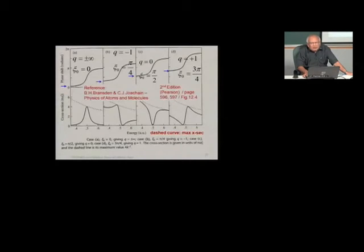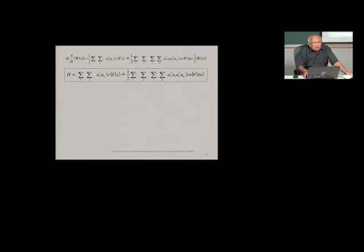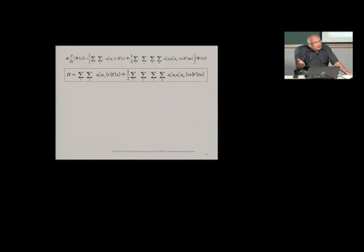Resonance profiles have very many different kinds of shapes and can be analyzed using the Fano parametrization of resonances. We also deal with second quantization, because when you deal with a many-electron atom you need to go beyond Hartree-Fock to take into account electron correlations, and it becomes important to use methods of second quantization.